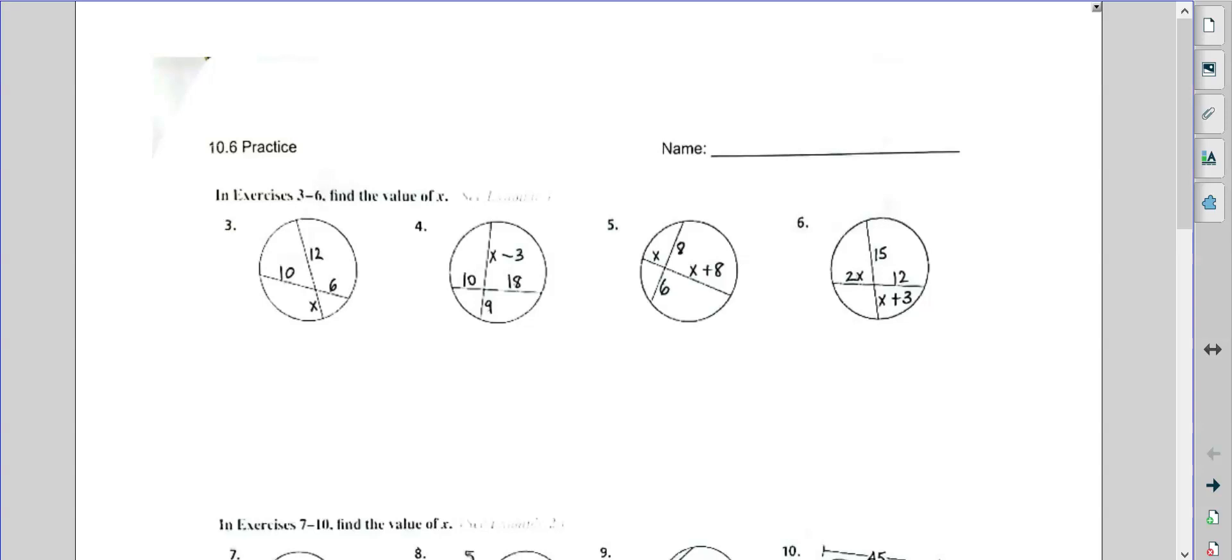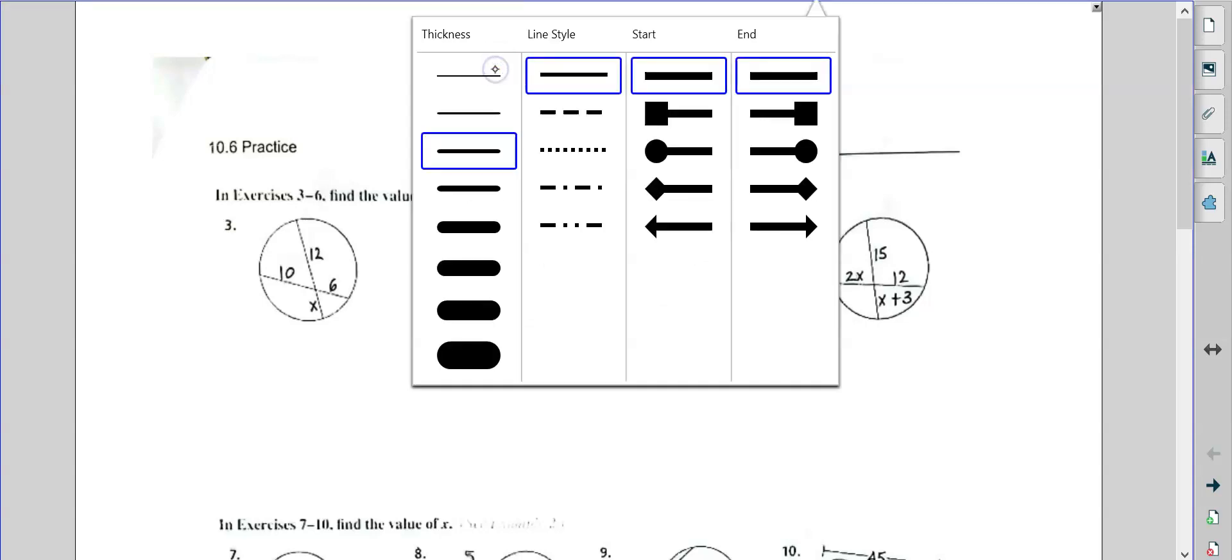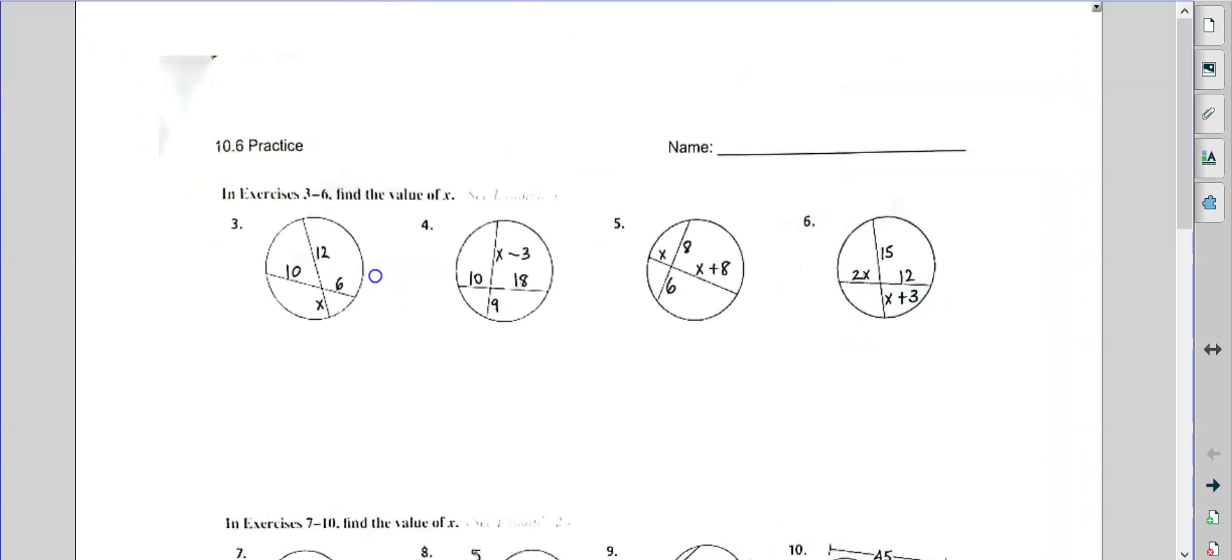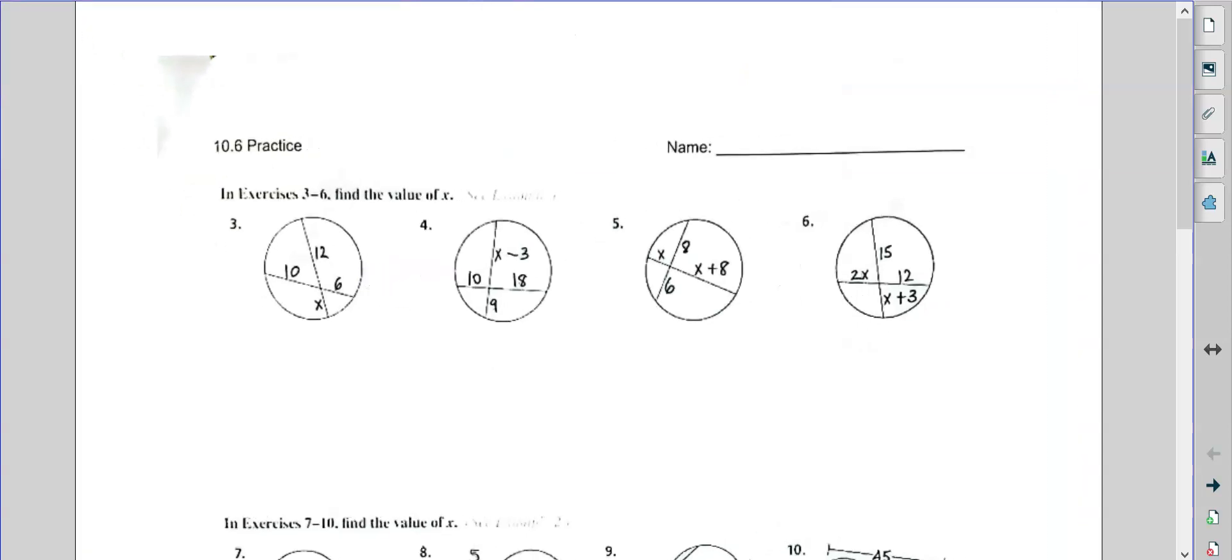All right, problem 10.6. So remember, in this situation, we're taking this times this. Okay, so 12 times x equals 6 times 10. So x is 5.